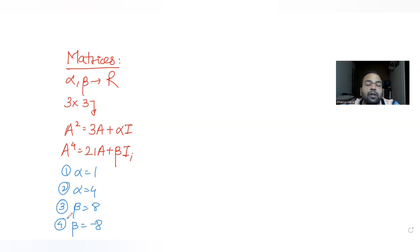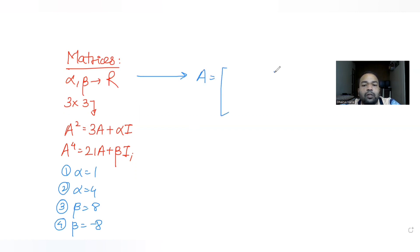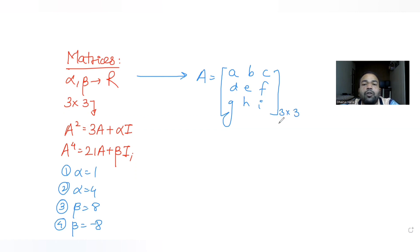If I have a 3×3 matrix A, that means it will have nine elements: a, b, c, d, e, f, g, h, i — three rows and three columns. We have been told that A² = 3A + αI.